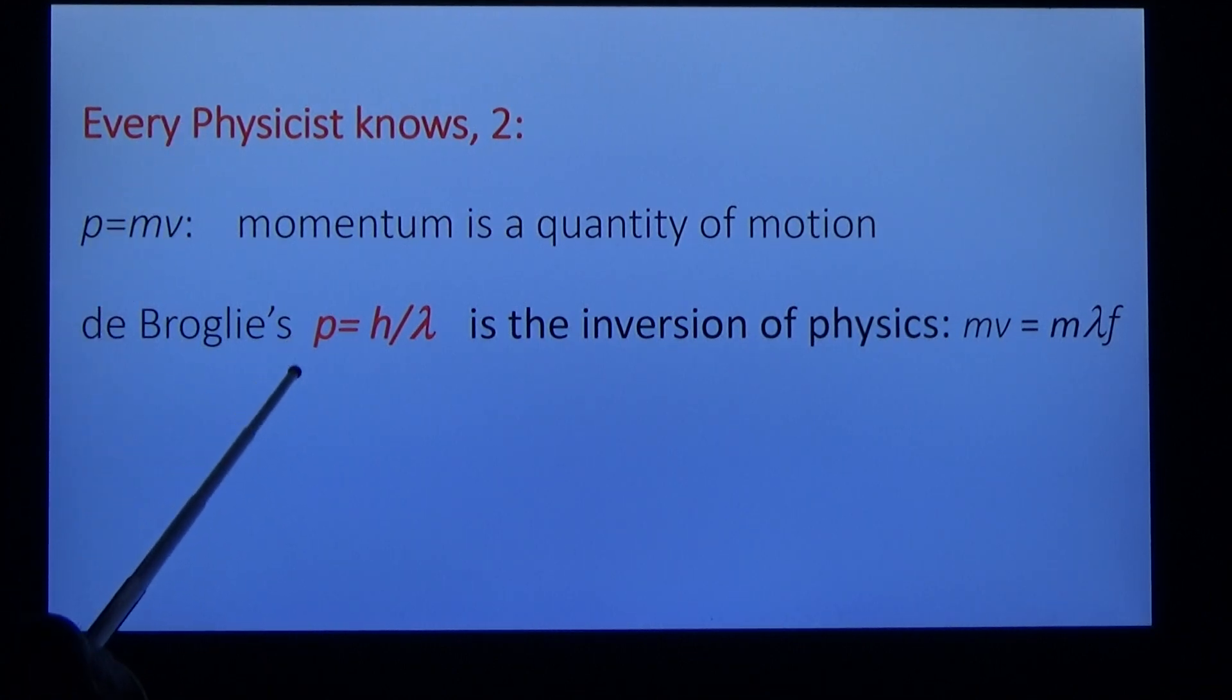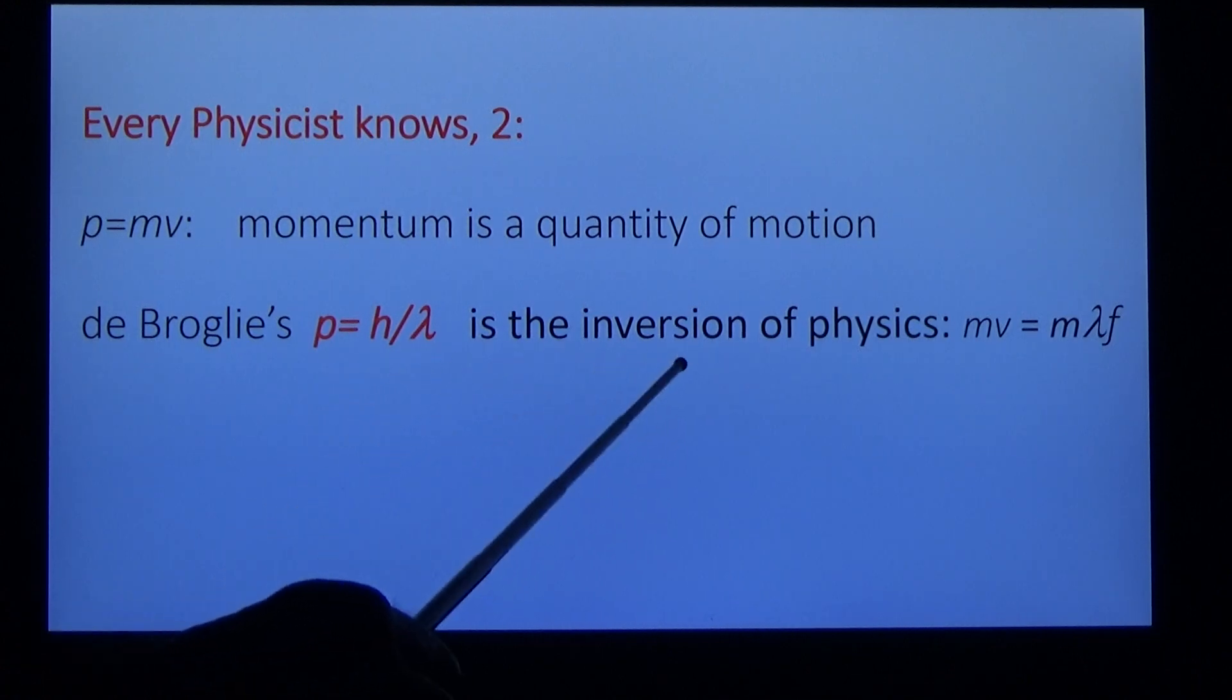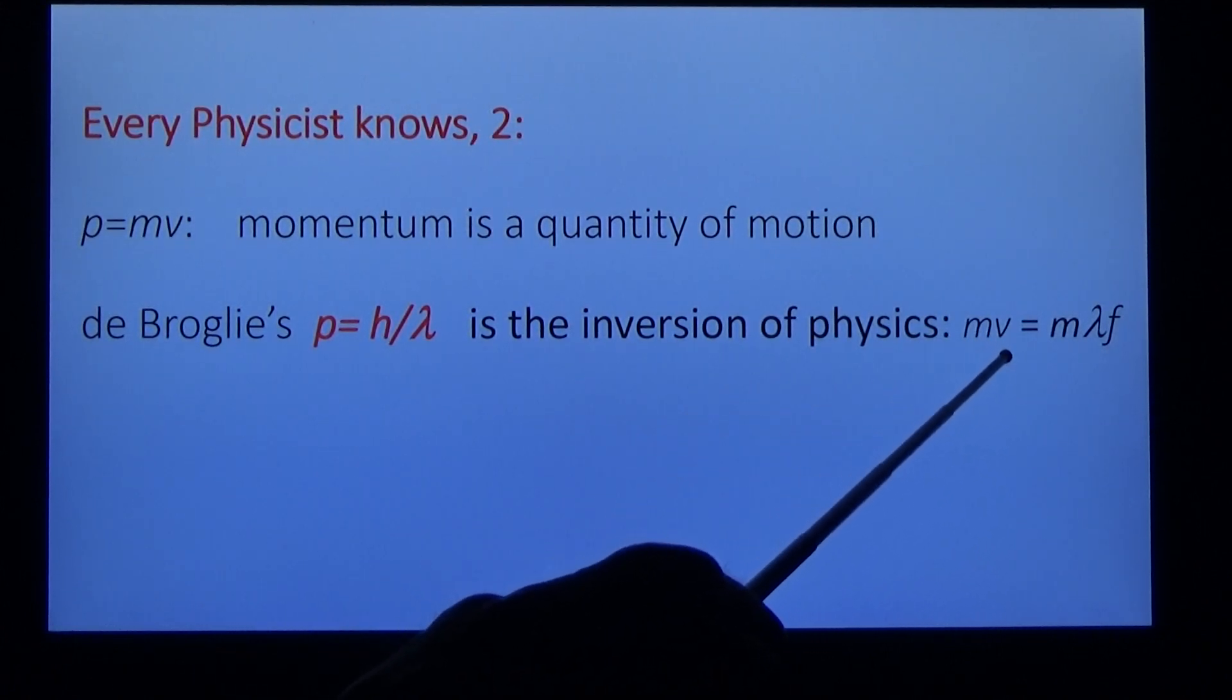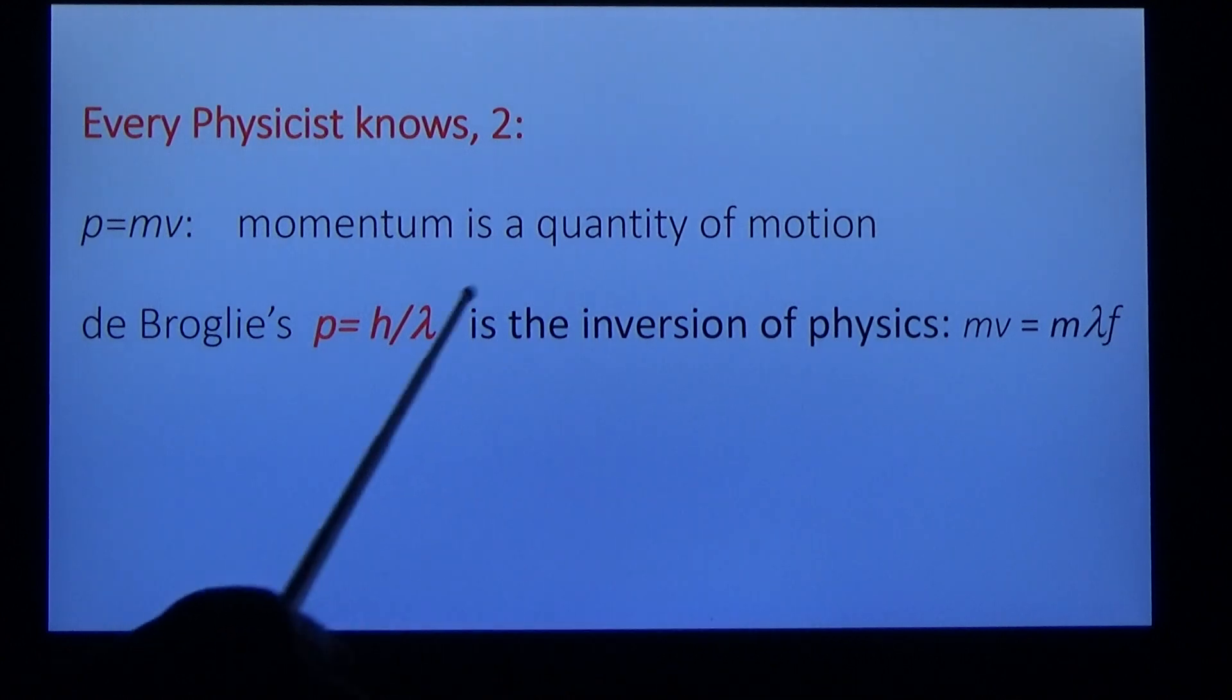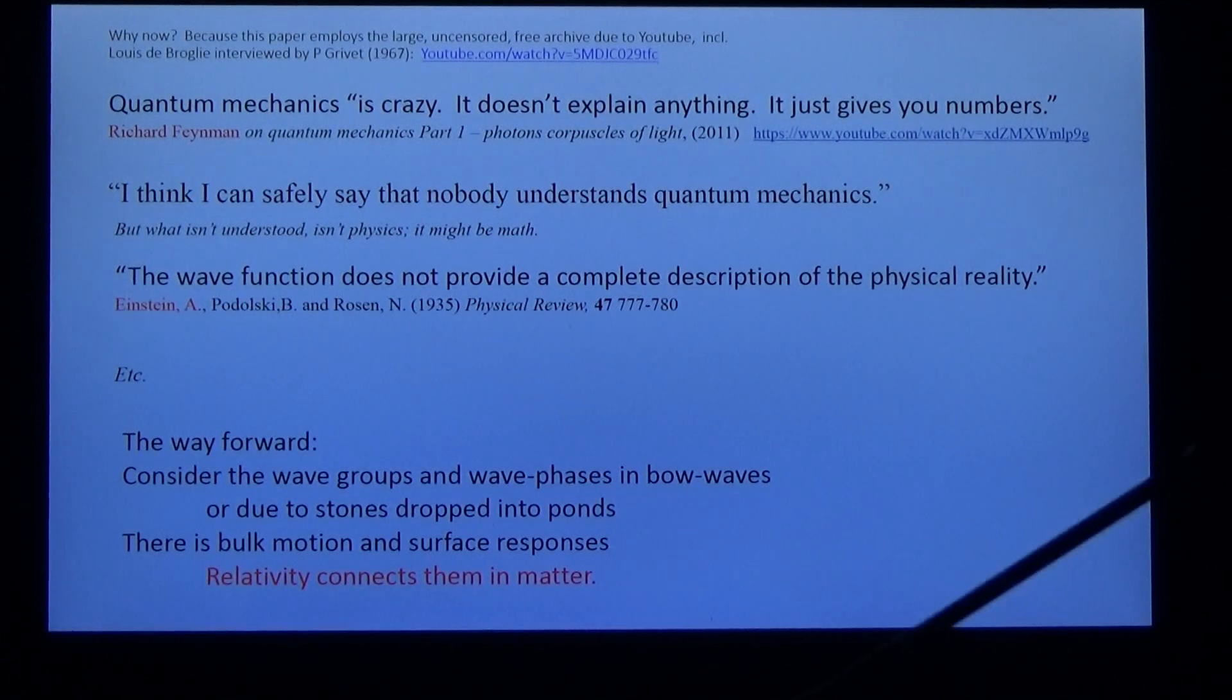And de Broglie's p is proportional to one over lambda, is the inversion of the physics we just noticed. Momentum is proportional to lambda—they're inverted. How do we understand it? Why?